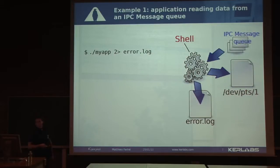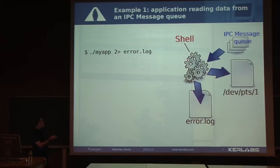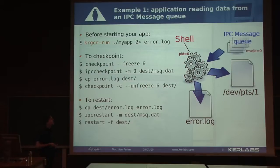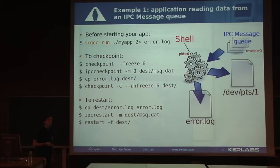Here is a first example — an application that reads data from an IPC message queue. You start your application with a command line from your shell, which creates some processes, maybe a multi-threaded process. This process will read data from an IPC message queue and write data to files. Before starting your application in KERIGED, you need to inform the kernel that it will be a checkpointable application. If you don't do that, there is no way to know this is an application, and the result would be to checkpoint the whole system — which you don't want.